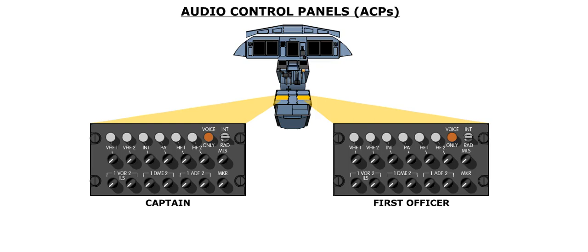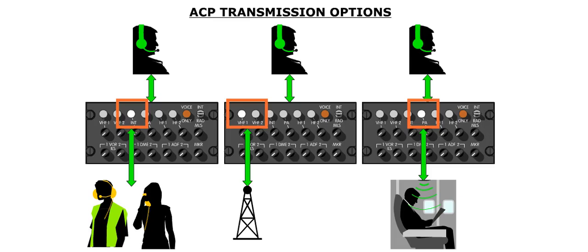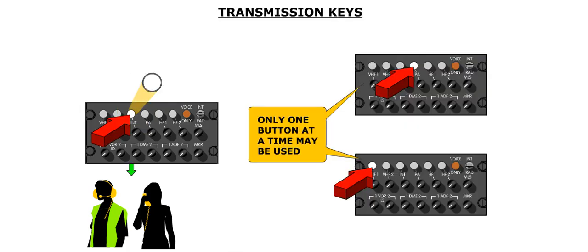Each pilot has an audio control panel, or ACP, which is used to make communication and navigation selections. These panels are located in between the pilots on the center console. The ACP provides the ability to transmit through the VHF radios, the interphone, or the HF radios. An additional selection enables the crew to make PAs from the flight deck. In order to transmit through a given source, the desired transmission key is pressed in. Once a transmission key is pressed in, it illuminates white. Only one key can be selected at a time; selection of a transmission key automatically deselects any previously selected mode.